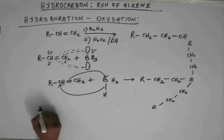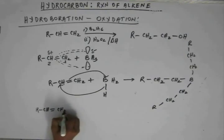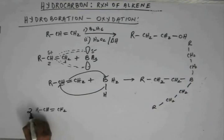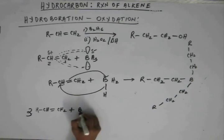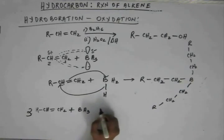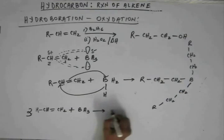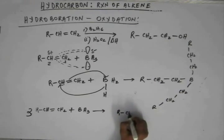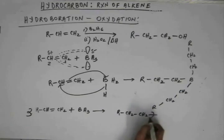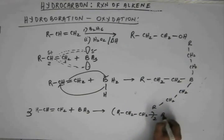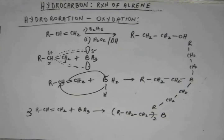When this happens and to write this reaction properly, what has happened is 3-alkene has reacted with 1 boron and we have got trialkyl boron.